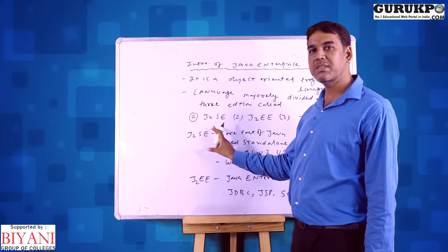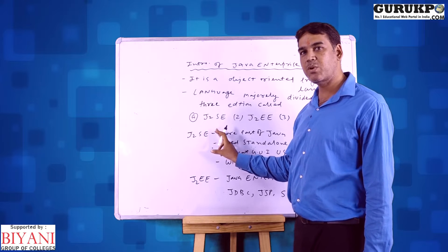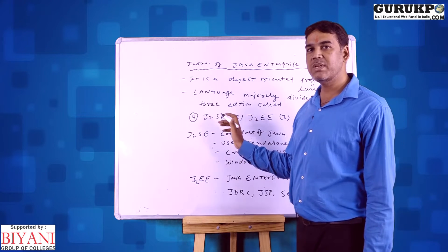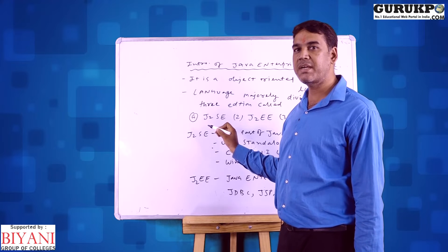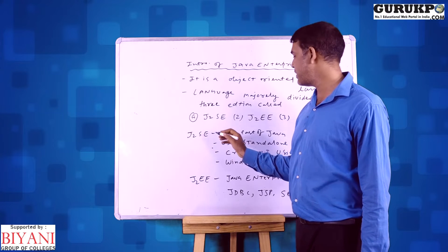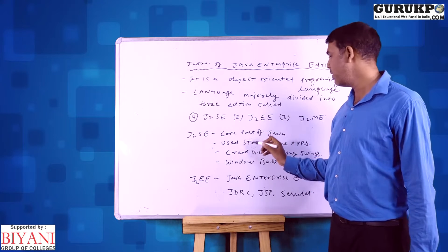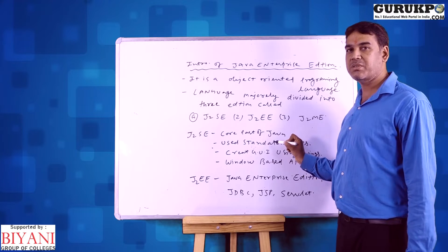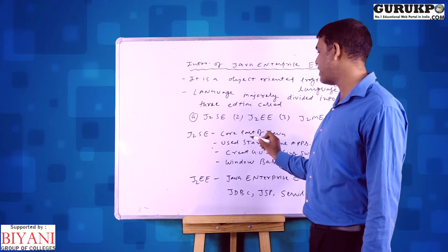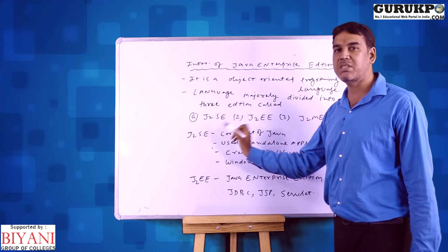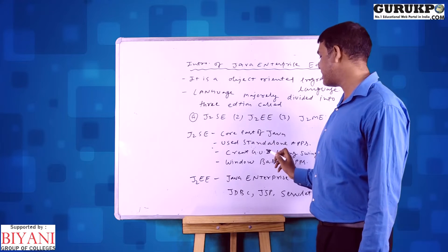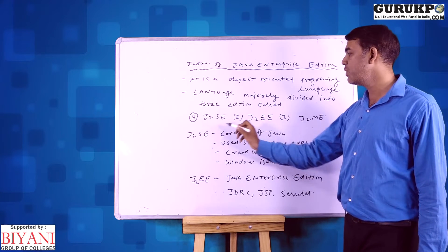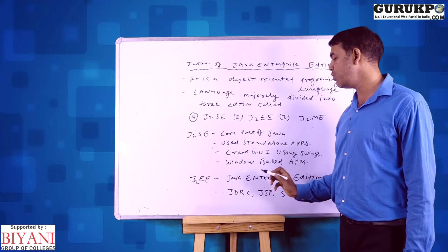First of all, we discuss about J2SE — what is the meaning of J2SE. J2SE is basically the Java Standard Edition which defines the core part of Java. We use standalone applications, we define standalone applications inside J2SE, and we create window-based applications and GUI-based applications also inside J2SE.